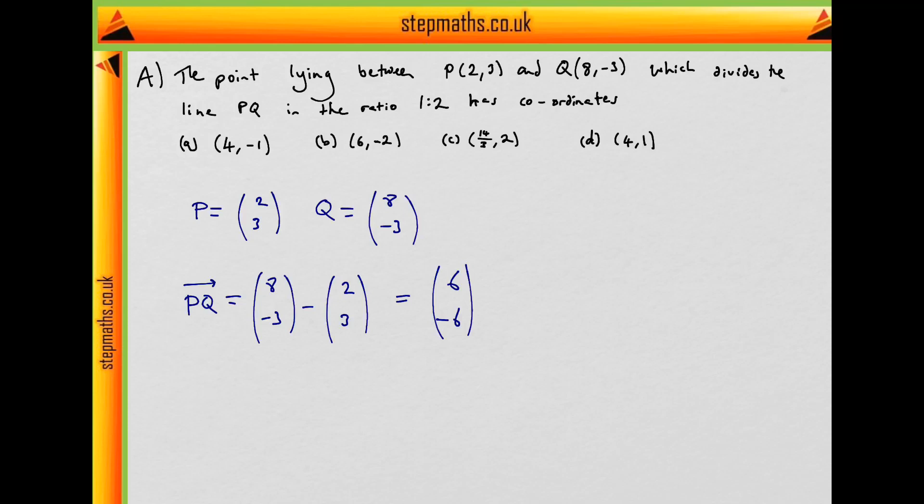OK, well, we want it to be in the ratio. Let's say our point is R. We want to have PR to RQ to be in the ratio of 1 to 2. Well, therefore, it follows that R is going to be equal to P plus 1/3 of the line between P and Q.